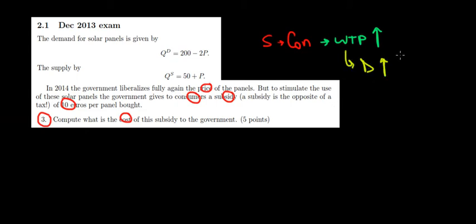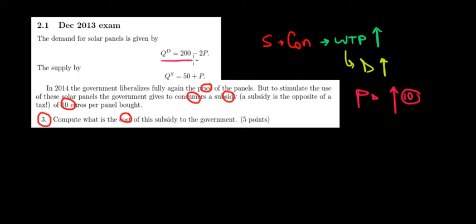So the demand increases — the demand is going to increase by 10 euros. If we have the price on the demand side, that's going to go up by 10 euros. The willingness to pay, the intercept on the price function, is going to go up by 10 euros. So let's first calculate the price of the demand side and increase it by 10 euros, and see what happens to the market.